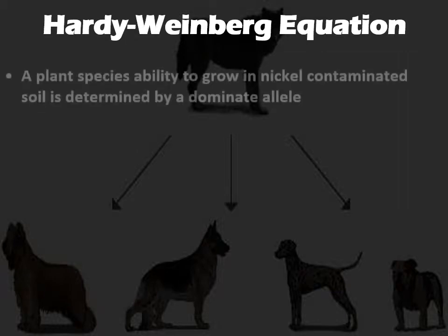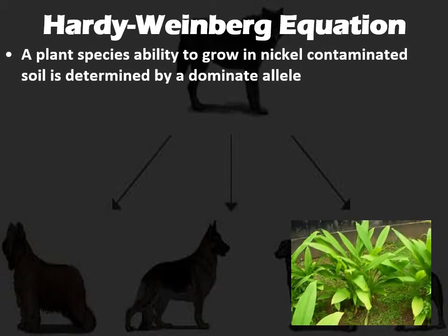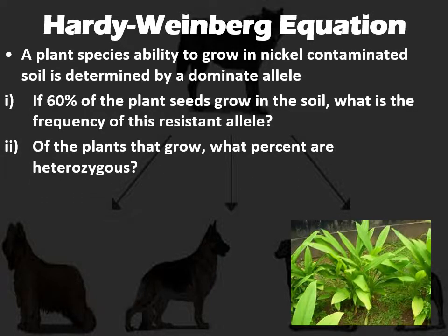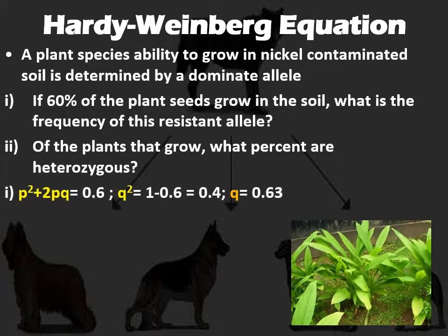Here's another practice example. A plant species that is able to grow in nickel-contaminated soil is determined by a dominant allele. 60% of the plant seeds can grow in that soil. First question: what is the frequency of the resistant (dominant) allele? Since growing in nickel is dominant, P² + 2PQ = 0.60. To find Q²: 1 minus 0.6 gives us 0.4. Square root of 0.4 gives Q = 0.63. Then P = 1 minus 0.63 = 0.37. So the frequency of just the dominant allele P is 0.37.